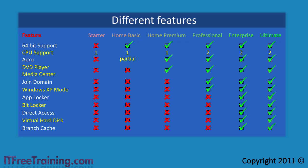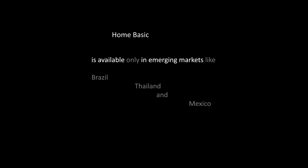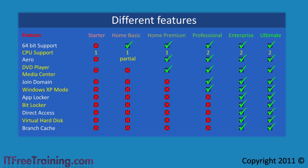The next edition is the Home Basic edition, available only in emerging markets such as Brazil, Thailand, and Mexico. 64 bit is supported, but like the Starter edition, only one CPU is supported with any number of cores. There is some support for the Aero interface, but certain features of the Aero interface have been removed.